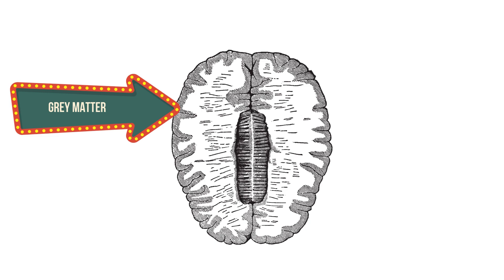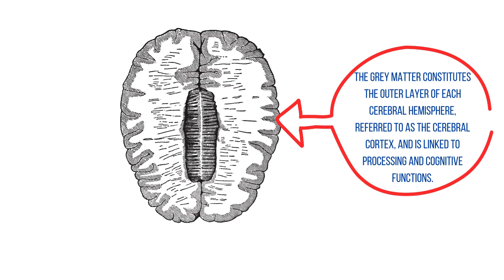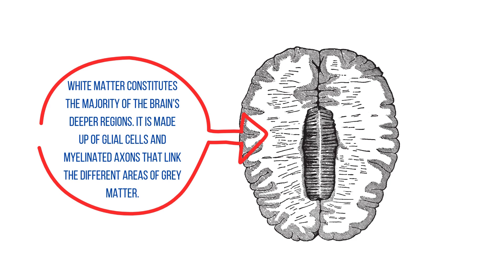Now let's discuss the internal structure of the cerebrum. The cerebrum is composed of the outer grey matter and inner white matter. The grey matter is the outer layer of each cerebral hemisphere known as the cerebral cortex and is responsible for processing and cognitive functions. The white matter makes up most of the brain's deeper regions; it consists of glial cells and myelinated axons that connect the various areas of the grey matter.